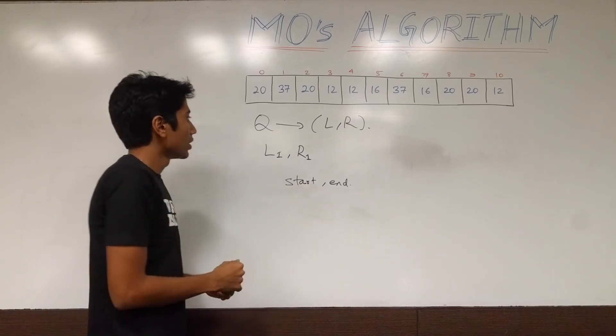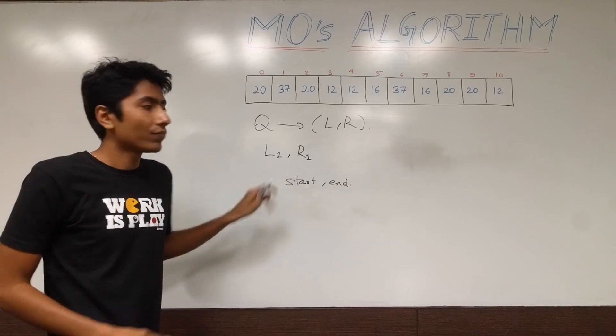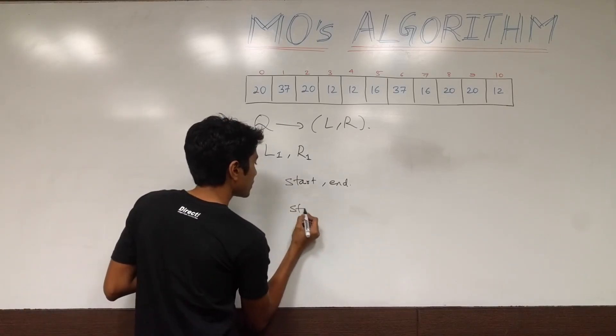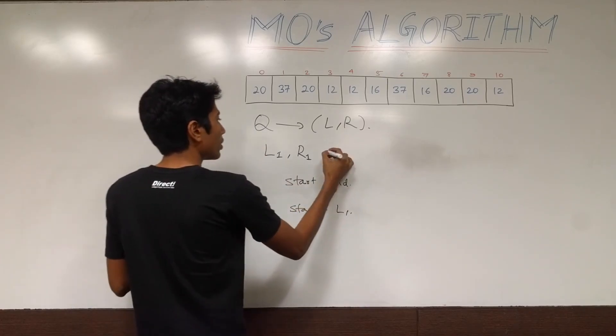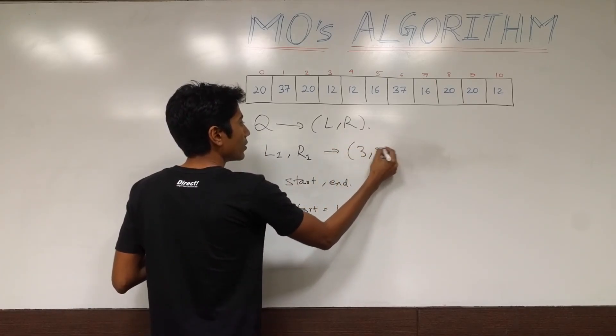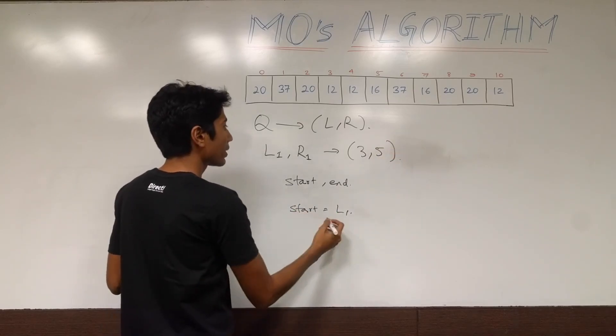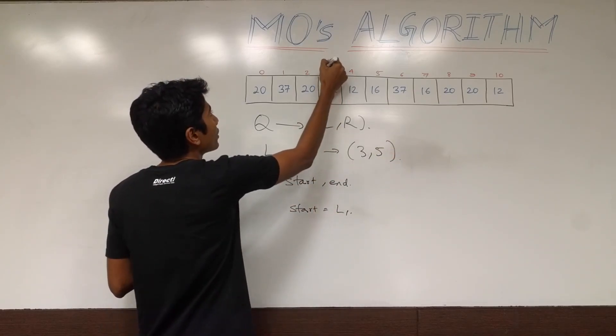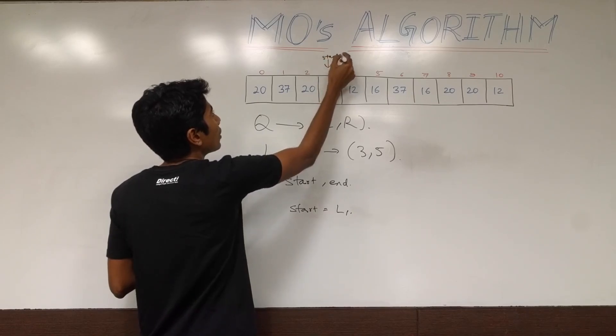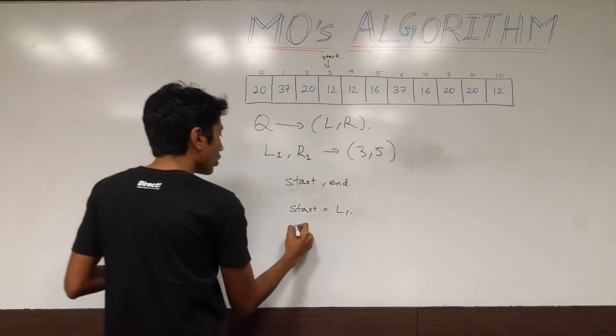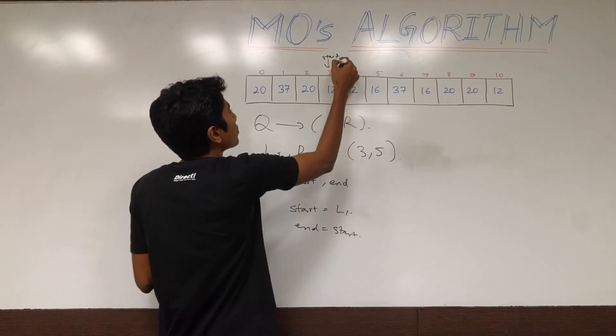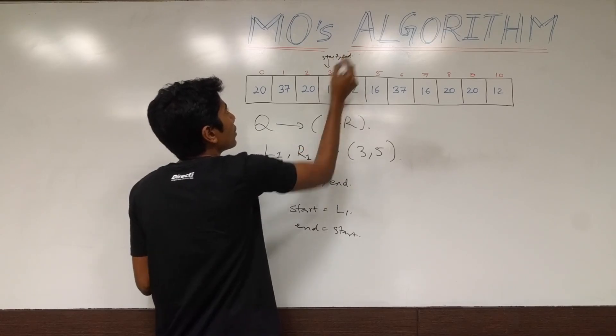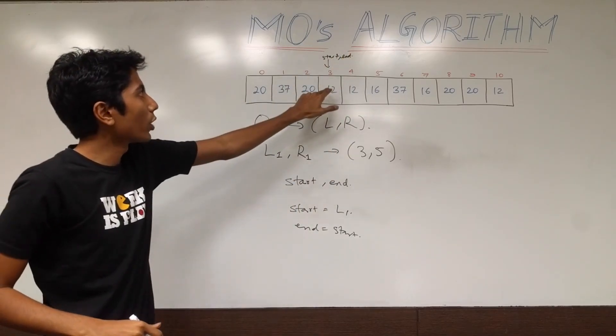So start will first jump into l1. So start is initialized to l1. For example if this is 3,5 then start becomes 3 which means start starts pointing here. And end also is initialized to start. So end is also pointing over here.